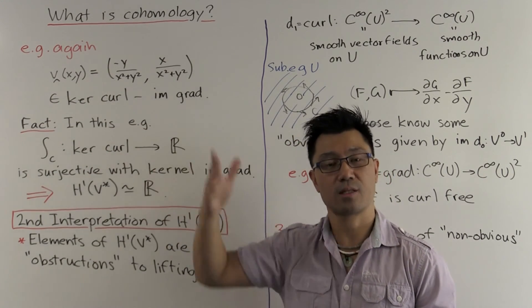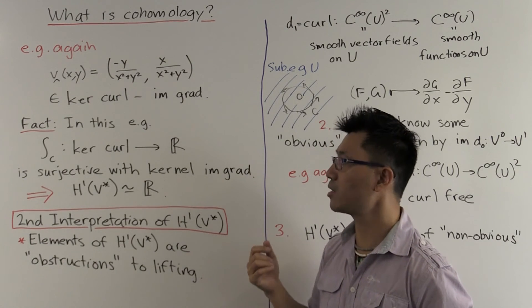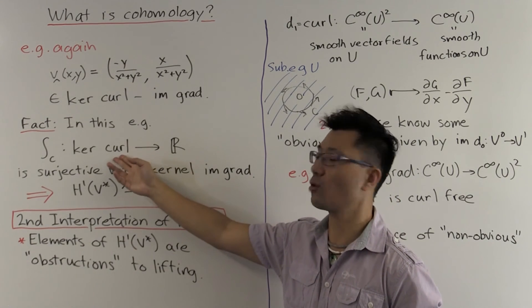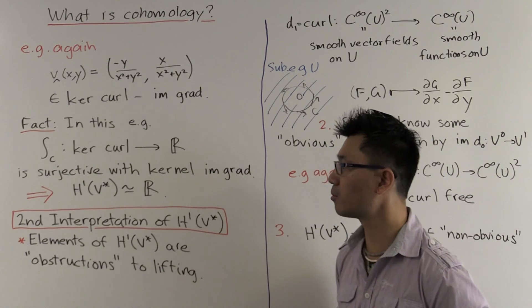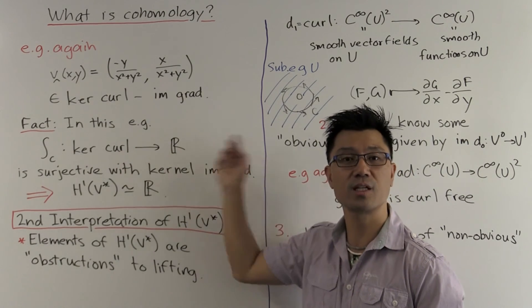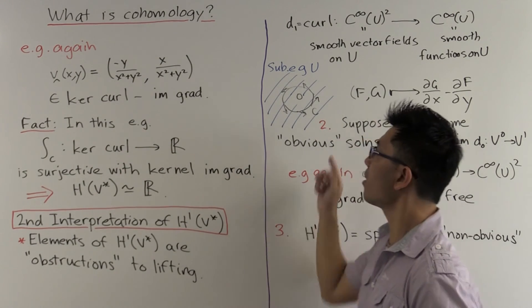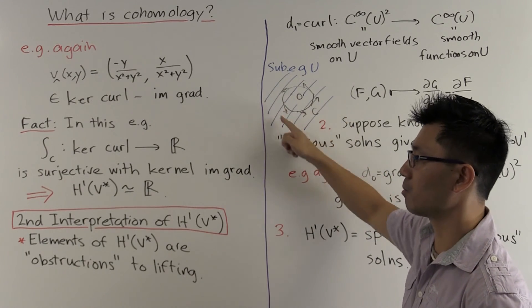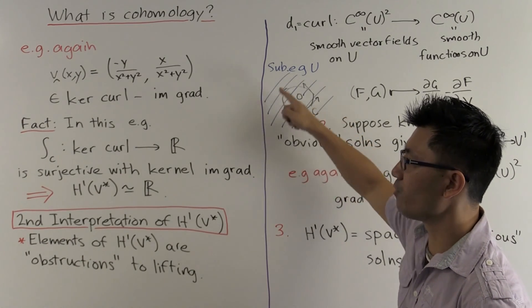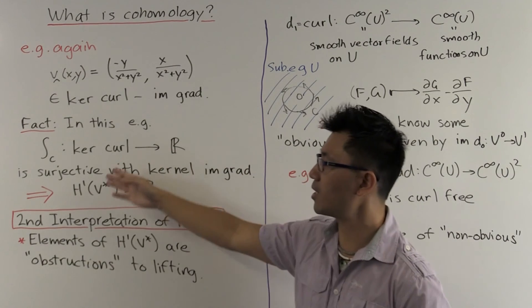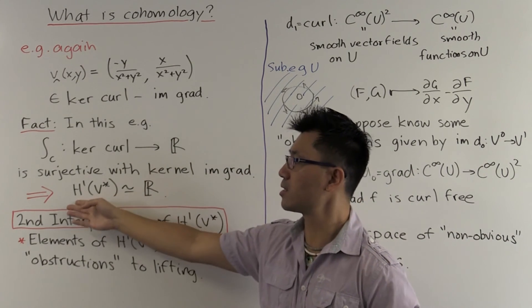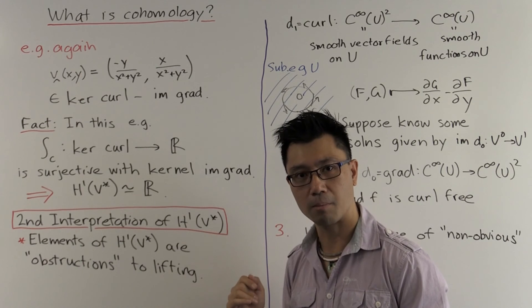Can we lift this to be the gradient of a scalar potential function? Can we find that? Can we lift that? Or what's the obstruction to lifting in this case? It's whether this integral vanishes or not. If this integral vanishes, then by what we've said here, it's zero in here, so it's in the image of that gradient map.